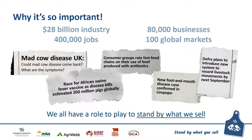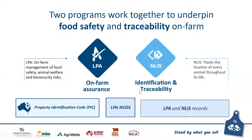While there are multiple producers and many properties across Australia, the integrity system is about delivering one measure of quality through one integrity system. Everyone has a role to play to ensure that we stand by what we sell. LPA is all about on-farm assurance, covering on-farm management of food safety, animal welfare and biosecurity risks — it's your tick of assurance for your product from producer through to consumer and demonstrates the professionalism of our industry. NLIS, on the other hand, is all about identification and traceability — it tracks the location of every animal throughout its life and is mandatory for producers.